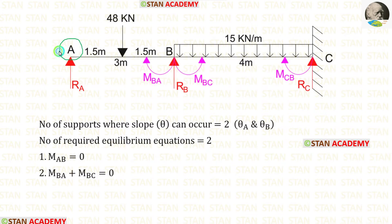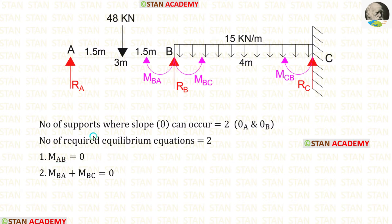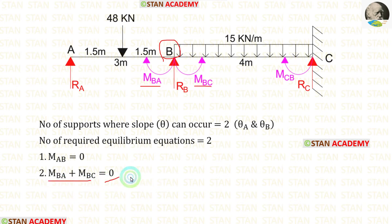To find these two unknowns, we need two equilibrium equations. At point A, there will be no moment because it is a simply supported end, so MAB is equal to 0 — this is our first equilibrium equation. The second equilibrium equation is made at joint B, where MBA and MBC are the two moments. When we add these two moments, it will be 0, and this is our second equilibrium equation.